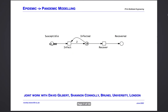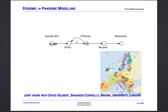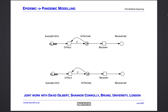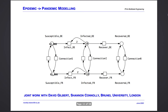Now let's turn this epidemic model into a pandemic model. Everything I'm now going to show you is joint work with David Gilbert and Jen Connolly from Brunel University London. In our understanding, pandemic modeling requires the notion of space. So we take our basic model, and by copy-paste we get a second location — let's consider Germany and France. People like to travel, so we add transitions for the symmetric movement between both locations.